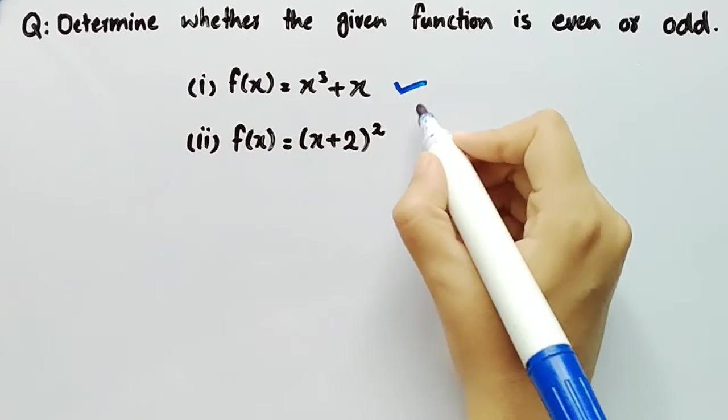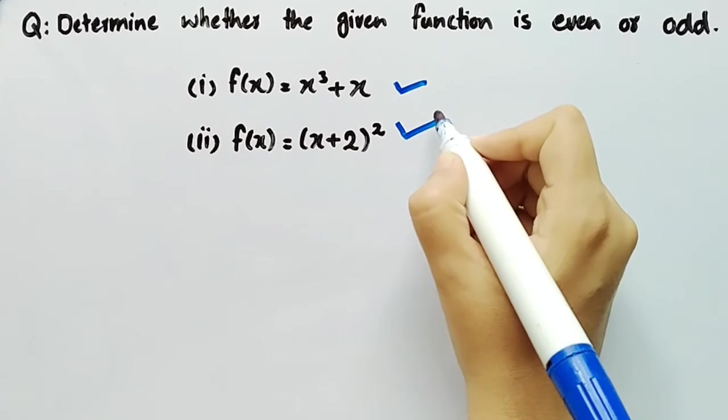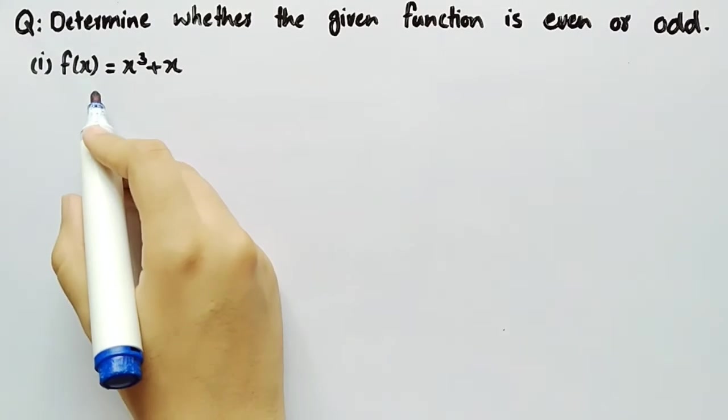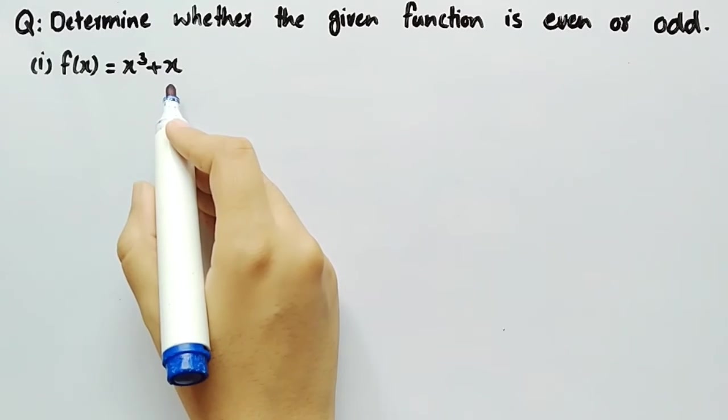In this video, we will discuss these two examples and determine whether the given function is even or odd. The first one is f(x) = x³ + x.